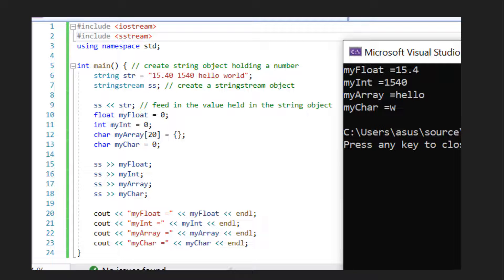So what I've got here is that I've got a basic example here where we've got a string declared here which contains numbers and characters. So we've got hello world being shown here. And then on line seven here what I'm doing is that I'm creating a string stream object.